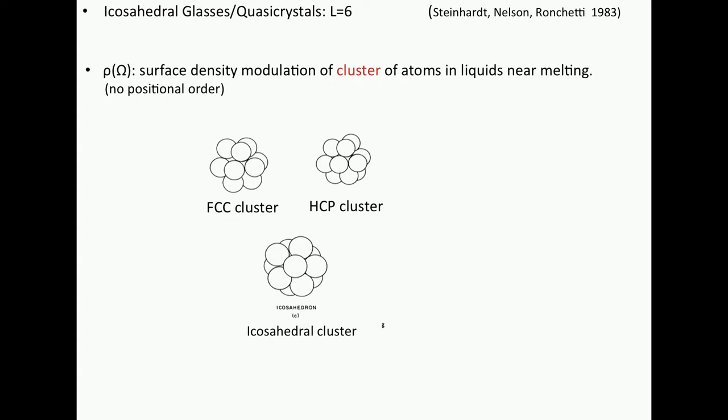Let's suppose that we are in a liquid close to freezing, maybe in a glassy state or in a supercooled system. So particles begin to cluster. It can be FCC locally, face-centered cubic, or hexagonal, close-packed, or icosahedral. So we imagine that we have a cluster of atoms, and I can play the same game. I can measure a density profile of this sort, rho of omega.